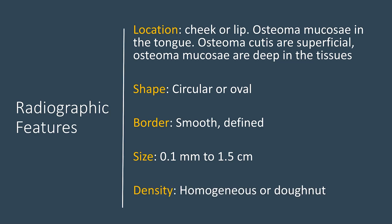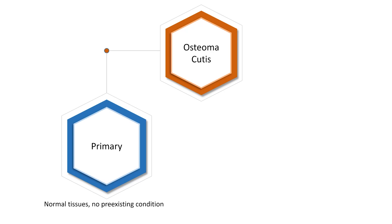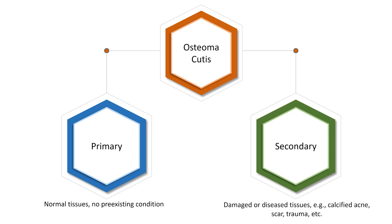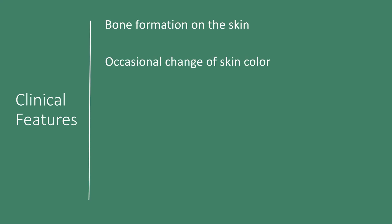The density could be mostly homogeneous or similar to a donut with an outer ring. Osteoma cutis can be two types. The primary osteoma cutis occurs in normal tissues. The secondary osteoma cutis occurs in damaged or diseased tissues, commonly in areas of calcified acne. A vast majority of osteoma cutis — almost 85% — is the secondary type. As the name states, osteoma cutis is bone formation in the skin. As the bone forms superficially on the skin, the skin color may change.